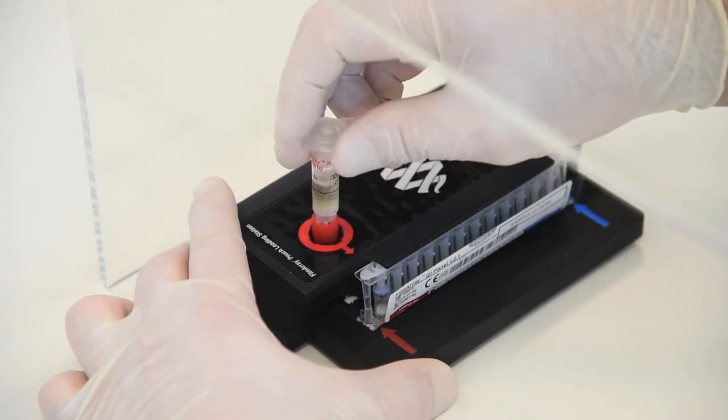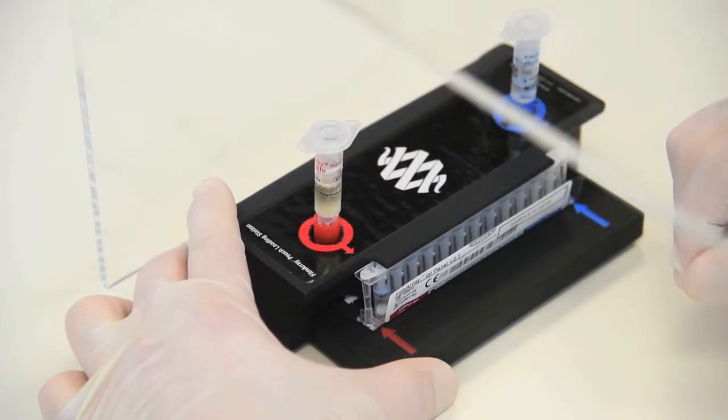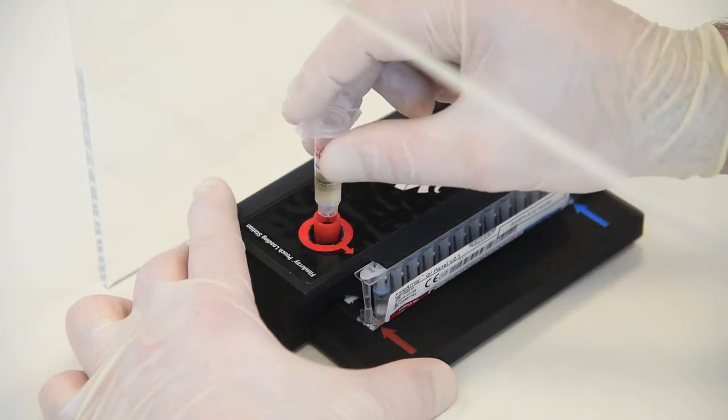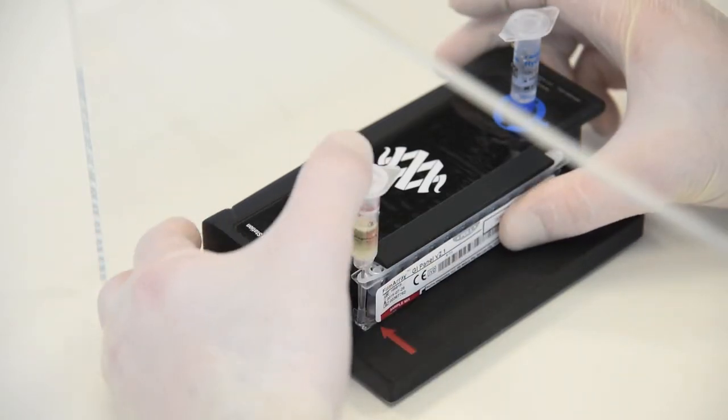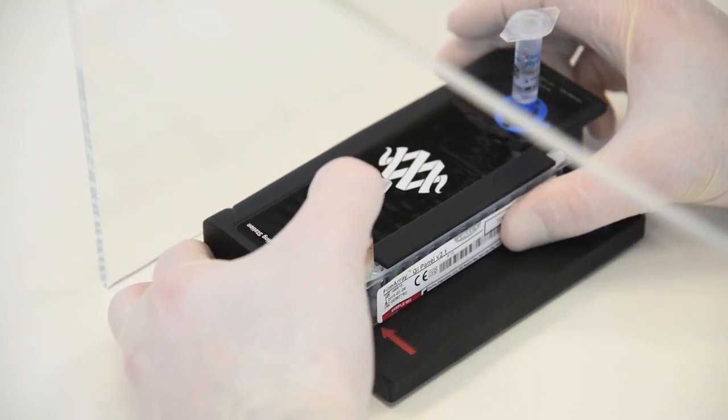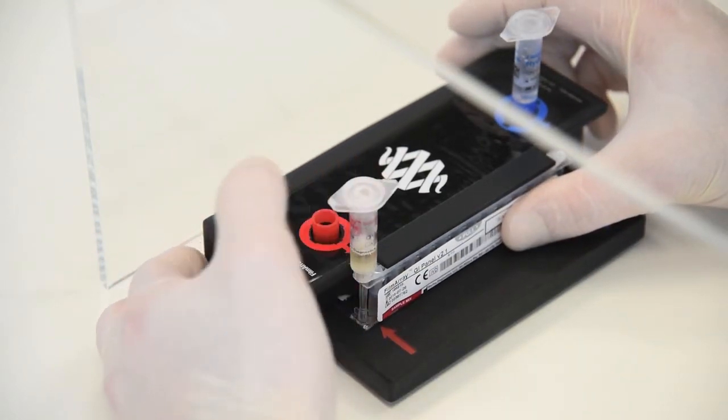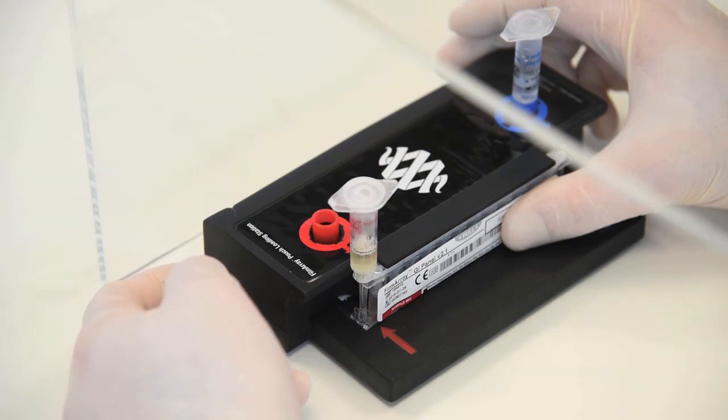Step 4, Load sample mix. Unscrew sample injection vial from cap. Pause for 3 to 5 seconds. Then remove sample injection vial, leaving cap in pouch loading station. Insert sample injection vial into pouch sample port. Forcefully push down to puncture seal. Wait as sample mix is drawn into pouch.